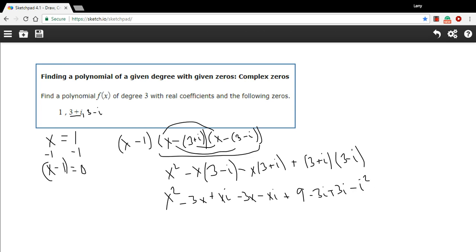All right, now we can do some simplifying here. We've got some pieces that add up to zero. I've got a positive x i and a negative x i. I'm just going to cross them out because they add up to zero. I've got a negative three i and a positive three i. Those add up to zero. So we've got x squared. I've got minus three x minus three x. That's a negative six x. And then I've got a nine and a negative i squared. i squared is i is the square root of negative one. When you square it, you get negative one. So a negative negative one is a positive one. So this is nine plus one, or ten.